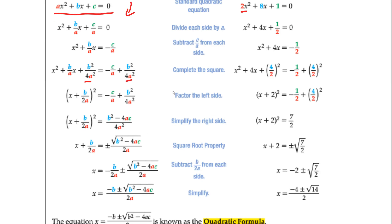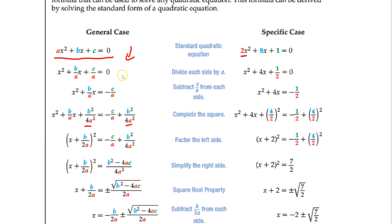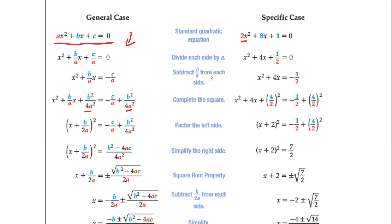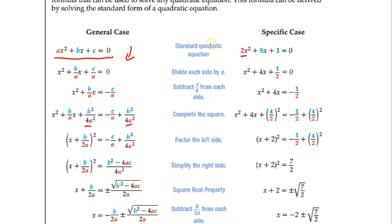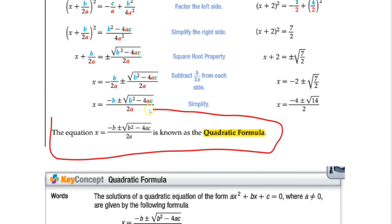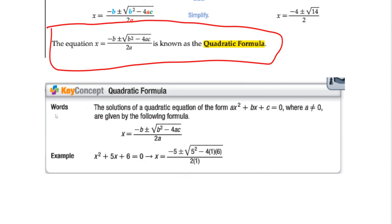So if you ever need to prove the quadratic formula, just complete the square on the general equation. The quadratic formula is like a shortcut to completing the square — you get the same result without going through all the work. That's the benefit of the quadratic formula, and it's a formula I will give you.